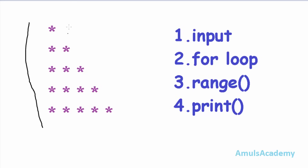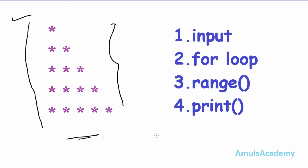The pattern is: a single star in the first line, two stars in the second line, three stars in the third line, four stars in the fourth line, and so on. We will see how to write a program to get output like this.